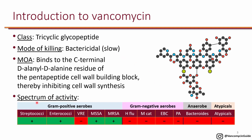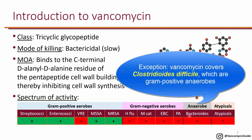For the most part, the activity of vancomycin is against gram-positive organisms, such as streptococci, enterococci — with the exception of vancomycin-resistant enterococcus — methicillin-susceptible Staphylococcus aureus, as well as methicillin-resistant Staphylococcus aureus or MRSA. Vancomycin does not have activity against gram-negative organisms, anaerobic organisms such as Bacteroides, or any of the atypical bacteria.